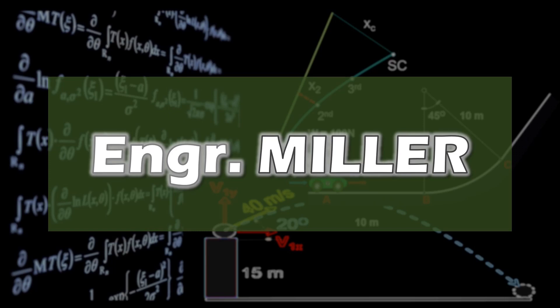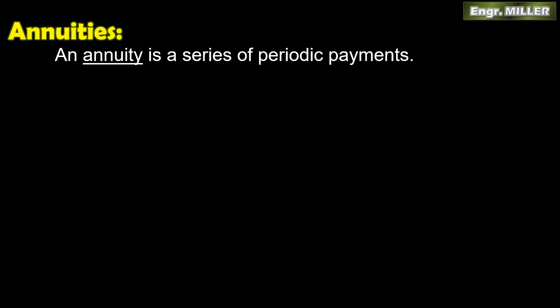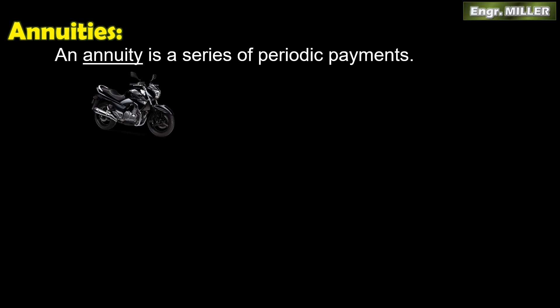We will also solve one of the problems submitted in the comments from our last video. Annuities are a series of periodic payments — uniform payments done at uniform intervals. So pareho ang bayarin sa pareho ang interval. An example is buying a motorcycle on installment: you pay 3,000 pesos monthly for 5 years. That payment is an annuity.